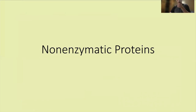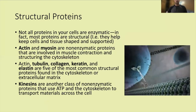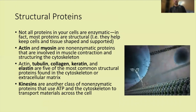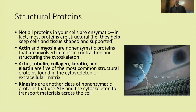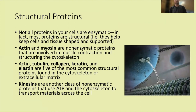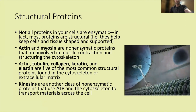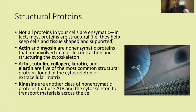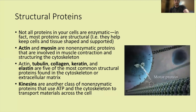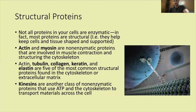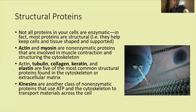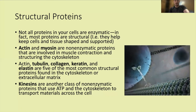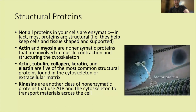Not all proteins are enzymatic — in fact, most proteins are structural, helping keep cells and tissues shaped and supported. Actin and myosin are non-enzymatic proteins involved in muscle contraction and cytoskeleton structure. Actin, tubulin, collagen, keratin, and elastin are five of the most common structural proteins found in the cytoskeleton or extracellular matrix. Kinesins are another class of non-enzymatic motor proteins that use ATP and the cytoskeleton to transport materials across the cell.